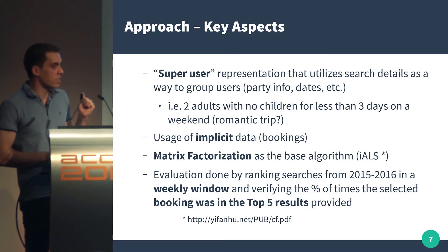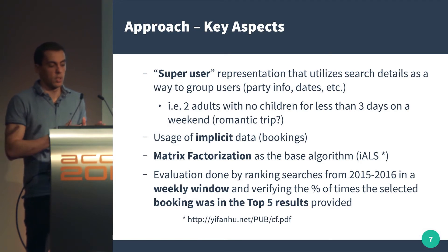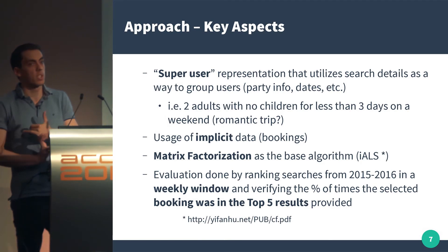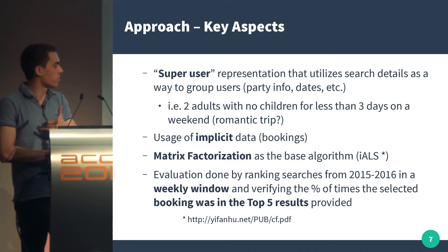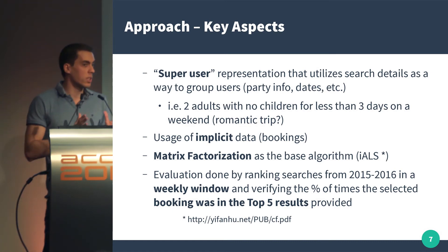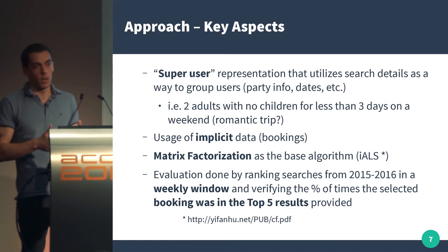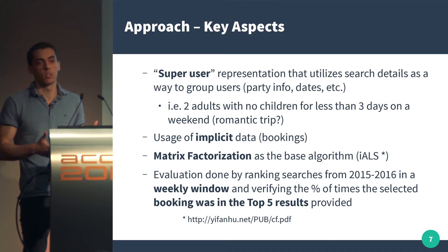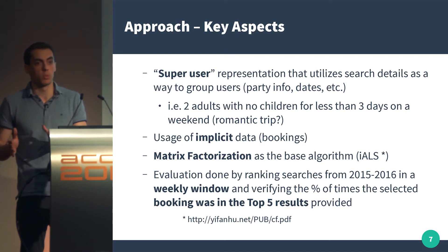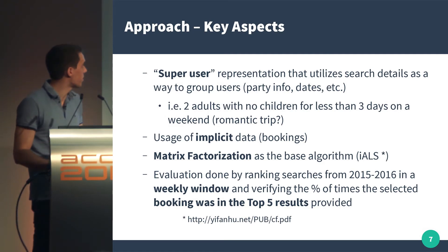When evaluating model performance, there are two key aspects. First, we look at percentage top-K of five results — when ordered by ranking, was the actual booking in the top five results? That's our key metric. Second, to account for the seasonality of how holidays work, we evaluate using a weekly window. We cannot randomize the data because it makes no sense — almost like a time series, you have to take that into consideration.